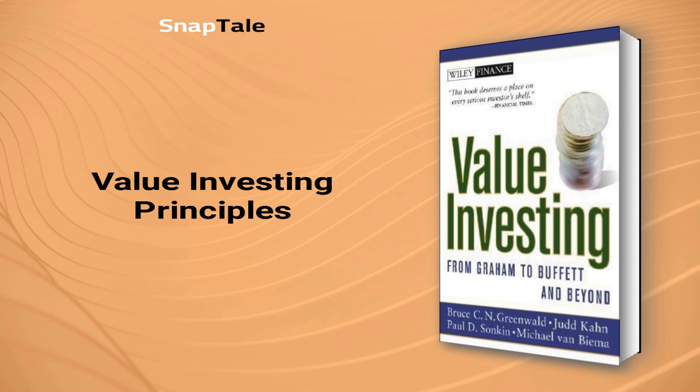Franchise Value is the difference between EPV and asset value, and it helps value investors assess a company's true worth. EPV lower than asset value indicates management is doing a bad job, while EPV approximately equal to asset value means management is mediocre and the firm lacks a competitive edge. An EPV higher than asset value may indicate outstanding management and substantial competitive advantages. However, investors must also consider the sustainability of the company's franchise value.